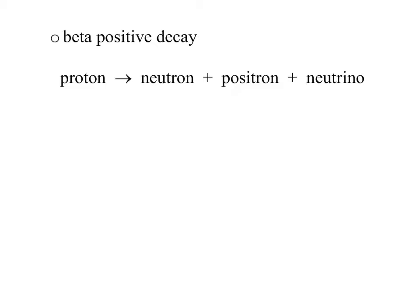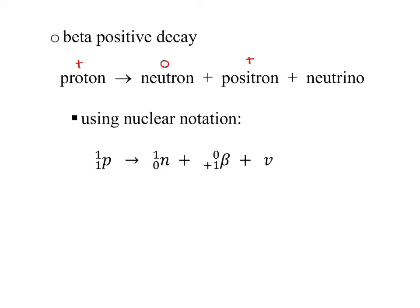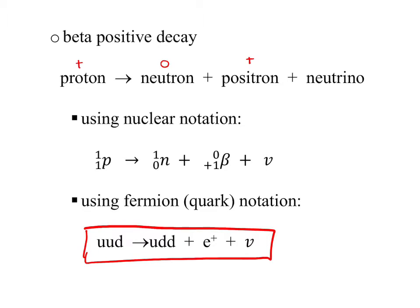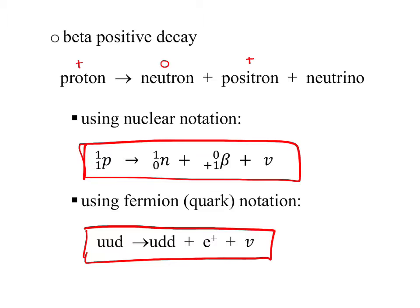We can do the same with beta positive decay. Here, a proton turns itself into a neutron, and it has to give off a positron to conserve the positive charge, plus a neutrino. In nuclear notation, the proton becomes a neutron plus a positive beta particle (positron) and a neutrino. Using quark or fermion notation: the proton (UUD) becomes a neutron (UDD) plus a positron and a neutrino. You just need to be able to write these decay equations in both notations.